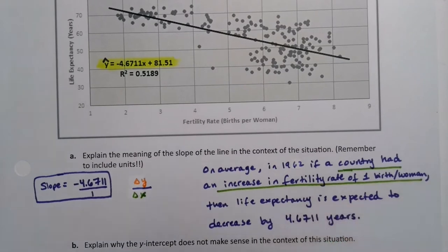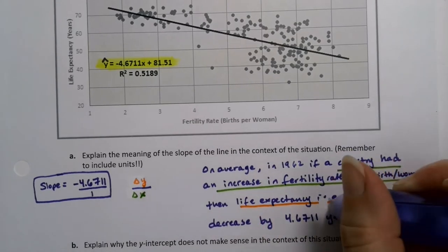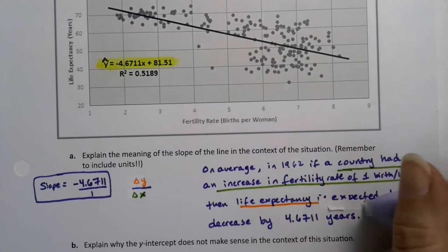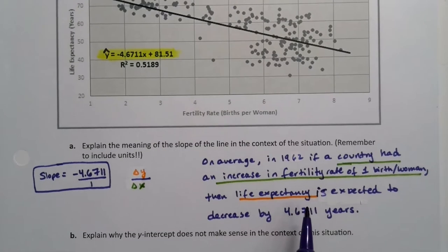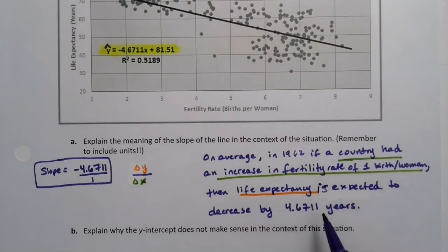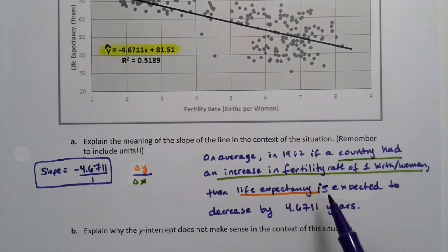Now, a couple things. This whole back end is the y part, life expectancy. So that's the y part right there. And you notice you can say it pretty straightforward, like I did here with life expectancy is expected to decrease, or you can get a little bit more flowery with it, with your language. But one way or another, you have to basically phrase out that y is going to go down.